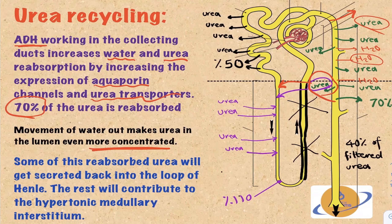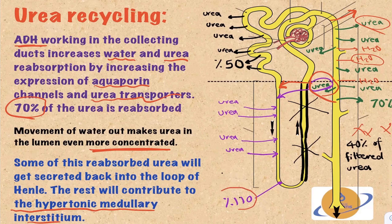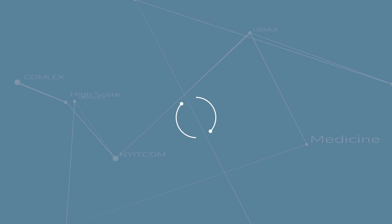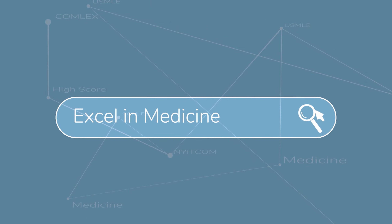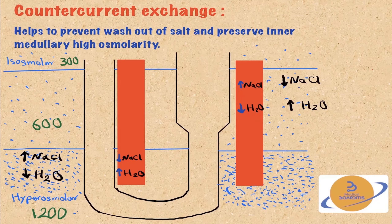Water moving out of the tubular lumen into the interstitium concentrates urea further inside the tubular lumen, driving even more urea reabsorption. Some of the reabsorbed urea is secreted back into the thin descending limb of the loop of Henle — this constitutes the urea recycling loop. The rest contributes to the formation of the hypertonic medullary interstitium. Starting from 110% urea concentration in the thin descending limb, about 70% is reabsorbed and 40% goes into the urine.